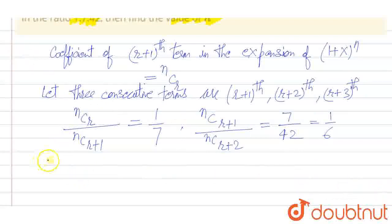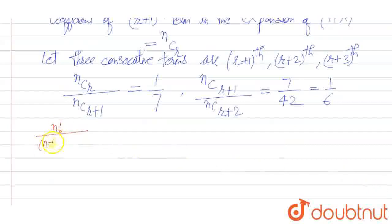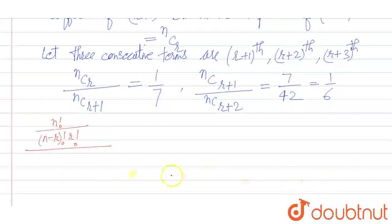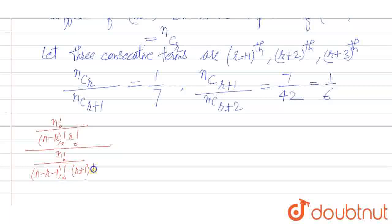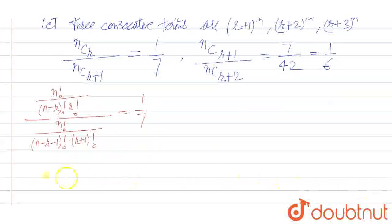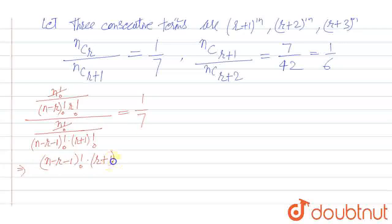Now we can solve this. The first ratio gives us: n! divided by (n−r)! times r! over n! divided by (n−r−1)! times (r+1)! equals 1/7. Simplifying, this becomes (n−r−1)! times (r+1)! divided by (n−r)! times r!, which equals 1/7.